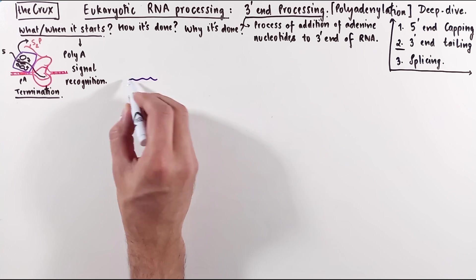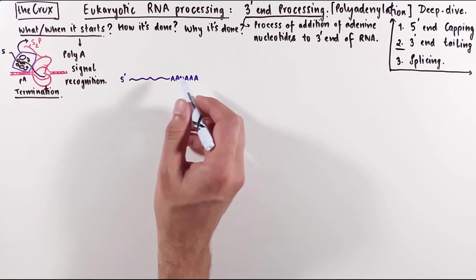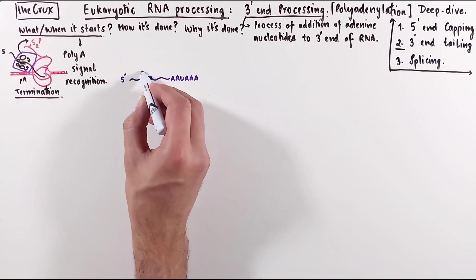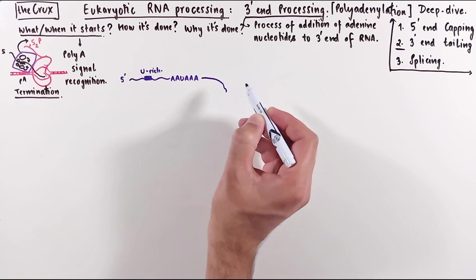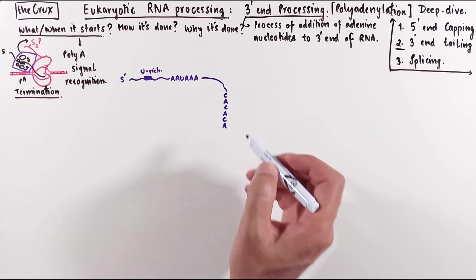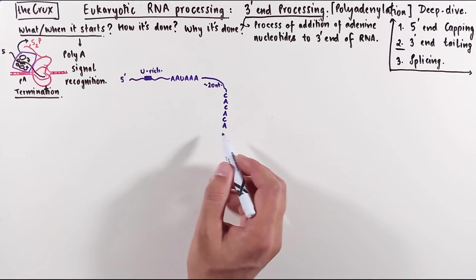We have seen this polyA sequence, AAUAAA. Just upstream of this signal, we usually have a U-rich sequence. And downstream of this polyA signal, somewhere about 20 or so nucleotides downstream, you will typically find a dinucleotide repeat made up of cytosines and adenines.